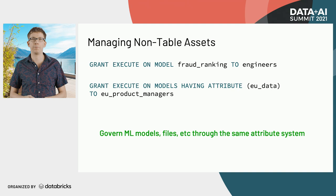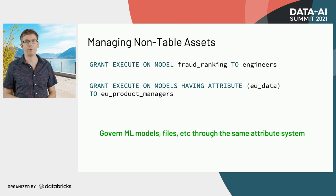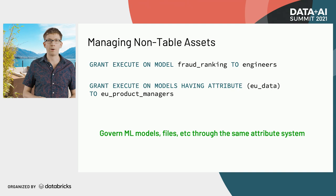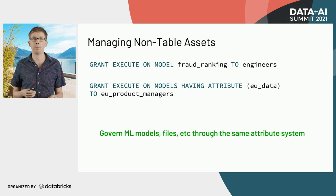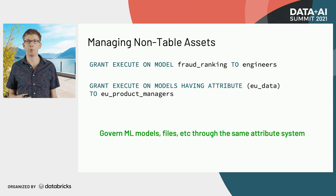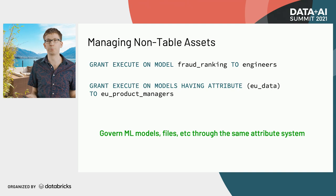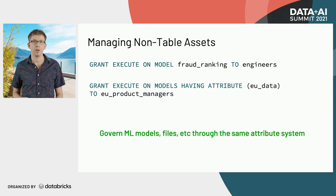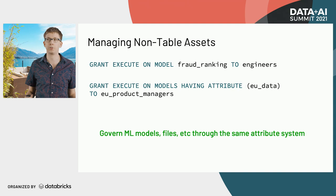We're also really excited about support for managing non-table access in a centralized way. For example, this is how our interface looks for managing machine learning models. You can have models from your MLflow model registry visible in the Unity Catalog, and then grant permissions on them to individual groups. You can also add attributes on models and grant permissions on all models having a specific attribute to a specific group. You can actually start governing machine learning models, files, tables, and views through the same attribute system — something very difficult to do today — giving you a straightforward way to manage all the data and derived assets in your organization.